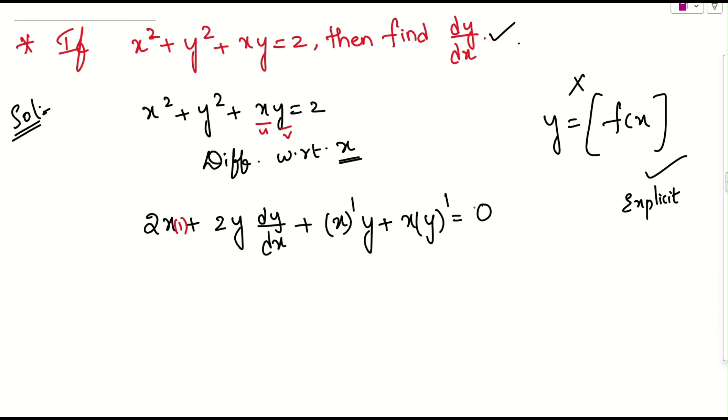So, after this, what we can do? Let me solve this further. 2x plus, this will be 2y into dy by dx plus x derivative will be what? 1 into y plus x into, what is y derivative? I can write y dash or I can write dy by dx. It becomes 0.